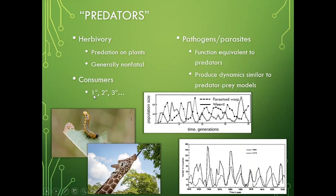Really what we're talking about is any sort of consumer. We have primary producers, then primary consumers which are the herbivores, secondary consumers which are the predators, and then tertiary predators — the top predators in the terrestrial system — just going up and up the food chain. Pathogens and parasites are also included when we're talking about predators and prey in this class.